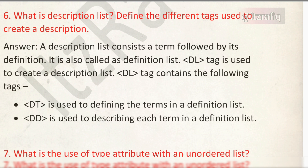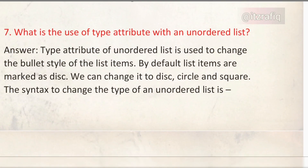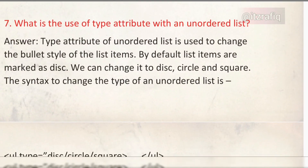Number six: define the different tags used to create a description list. First is the dl tag — it is the main tag to create a description list. Inside dl, we write dt and dd. The dt tag defines the term of the definition, and the dd tag describes the term of the definition.